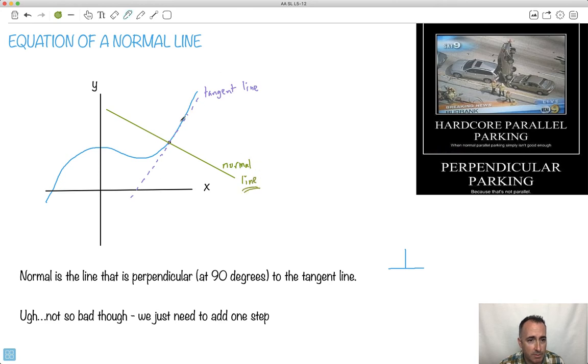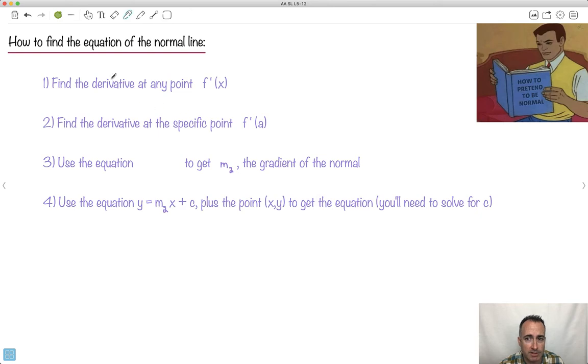So it's very much like a tangent line, so we're gonna do a lot of the same things. I'm saying it's not so bad, we just need to add one step to what we've done for tangent lines. So if you remember what we did for a tangent line like this. How to pretend to be normal. Get it? Because we're doing normal lines.